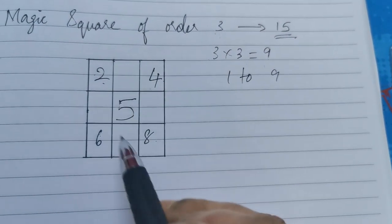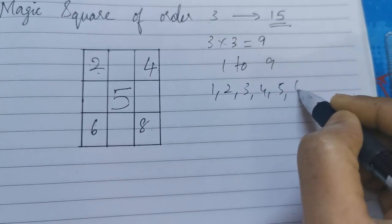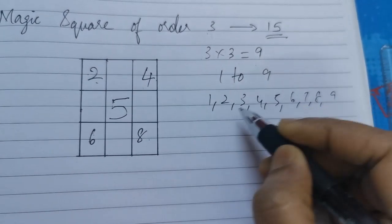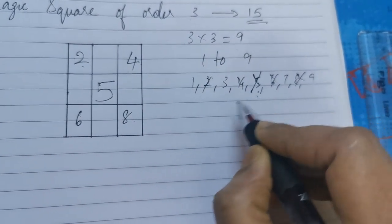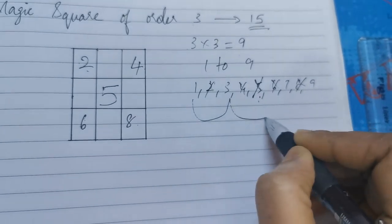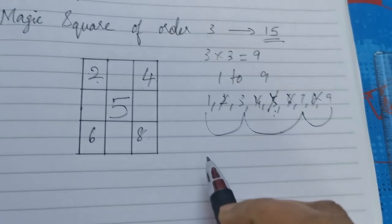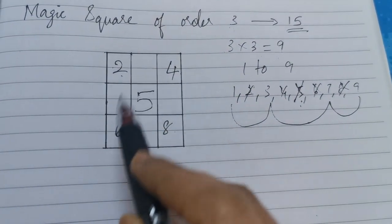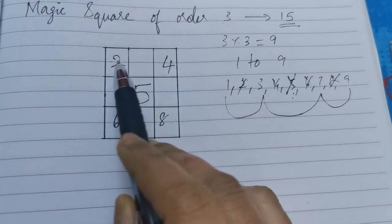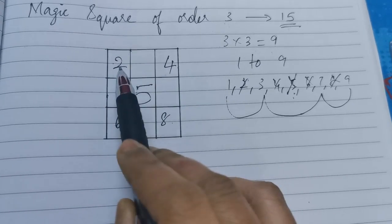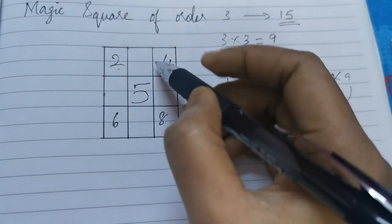We have 4 squares remaining. We filled 2, 4, 6, 8 in the corners and 5 in the center. The remaining numbers are 1, 3, 7 and 9. These 4 numbers need to be filled so we get 15 when we add. Let's take the top row: 4 plus 2 gives 6. 6 plus what gives 15? 6 plus 9 gives 15. Checking: 9 plus 4 is 13, 13 plus 2 is 15. So adding horizontally we get 15.